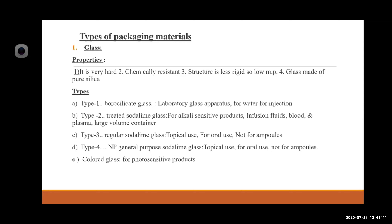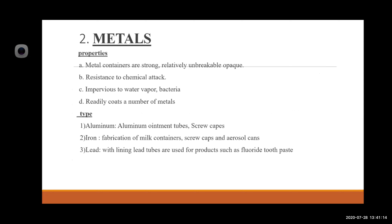The second packaging material is metals. Metal properties: metal containers are strong, relatively unbreakable, opaque, and resistant to chemical attack. They are impermeable to water vapors and bacteria. Types include aluminum, iron, and lead. Aluminum is used for tubes, screw caps. Iron is used for fabrication of milk containers, screw caps, and aerosol cans. Lead with lining — lead tubes are used for products such as fluoride toothpaste.